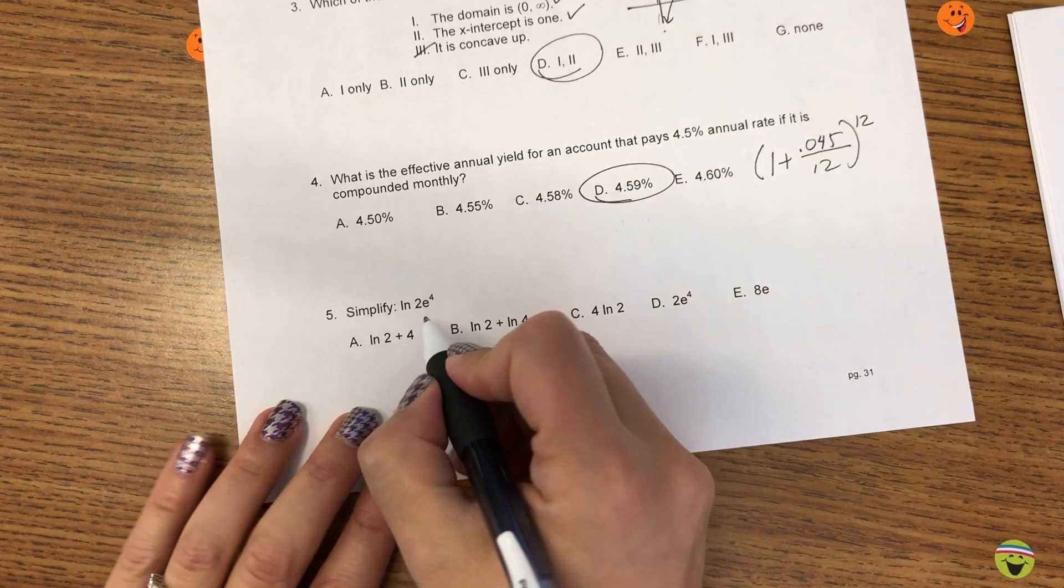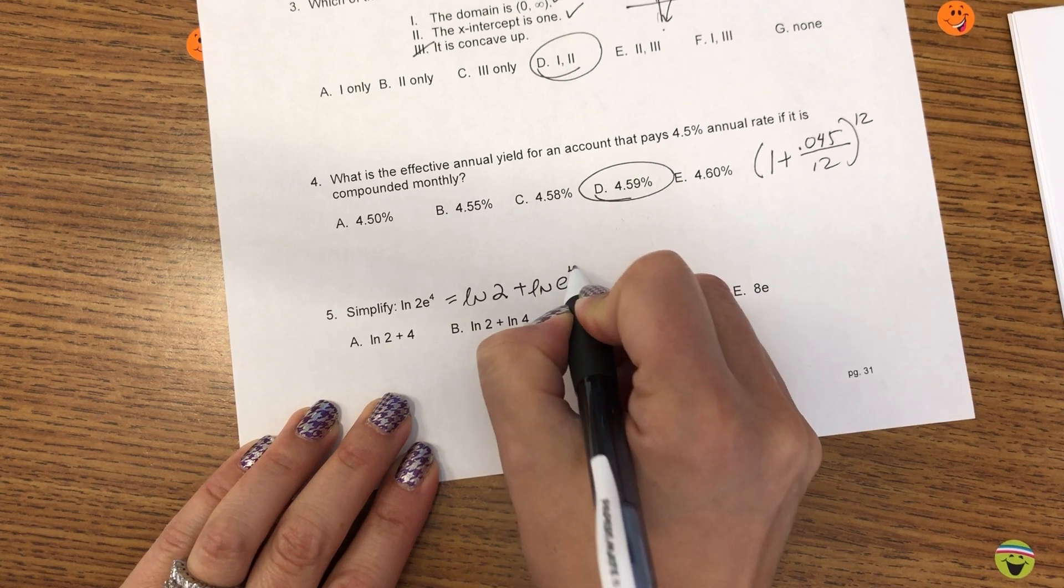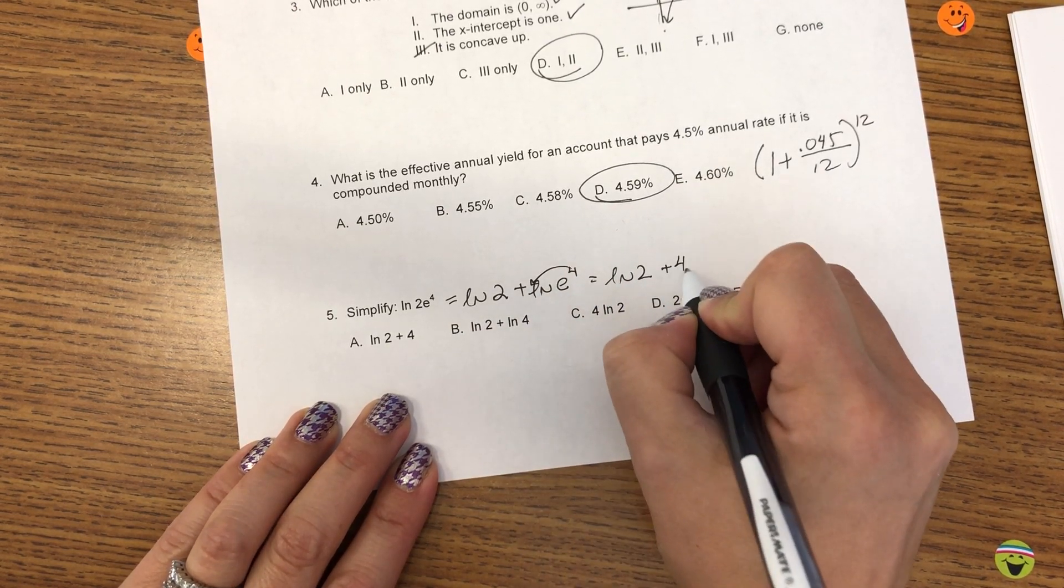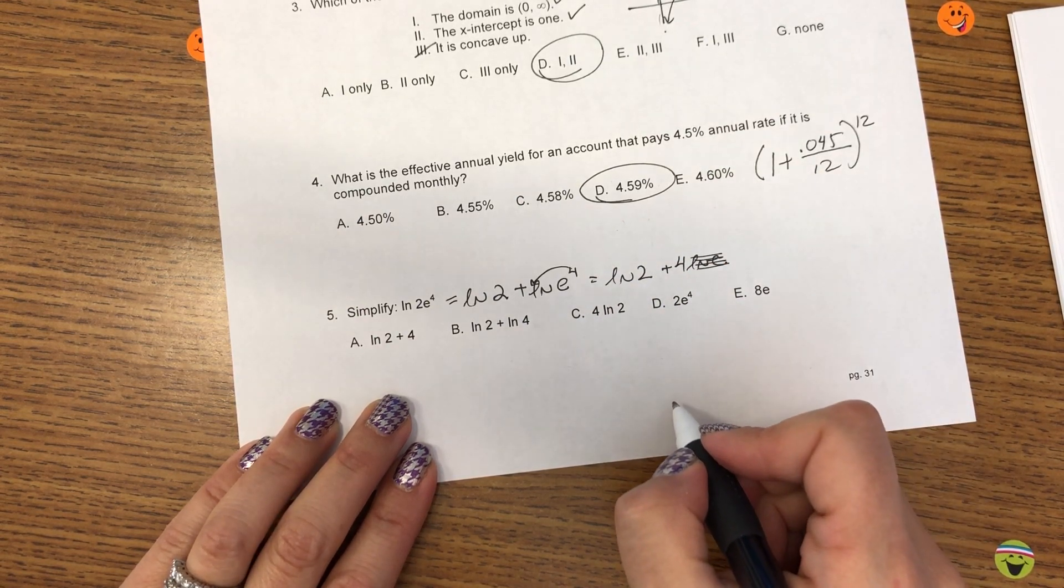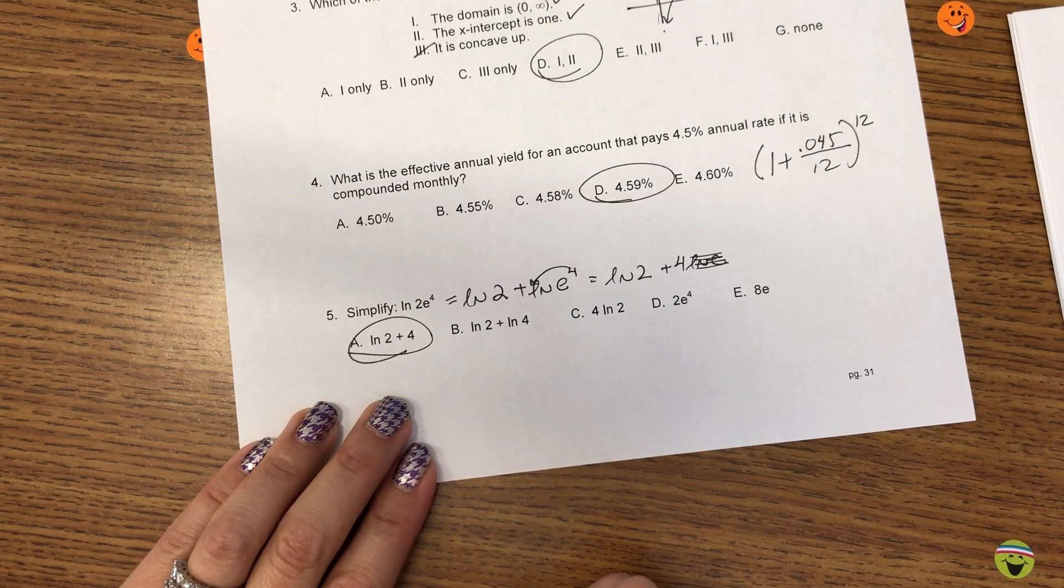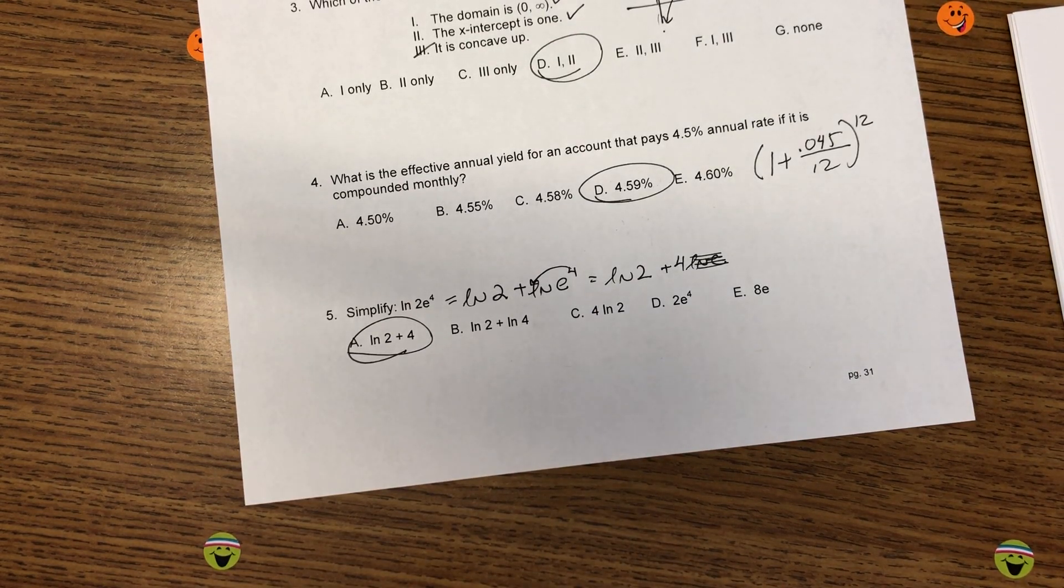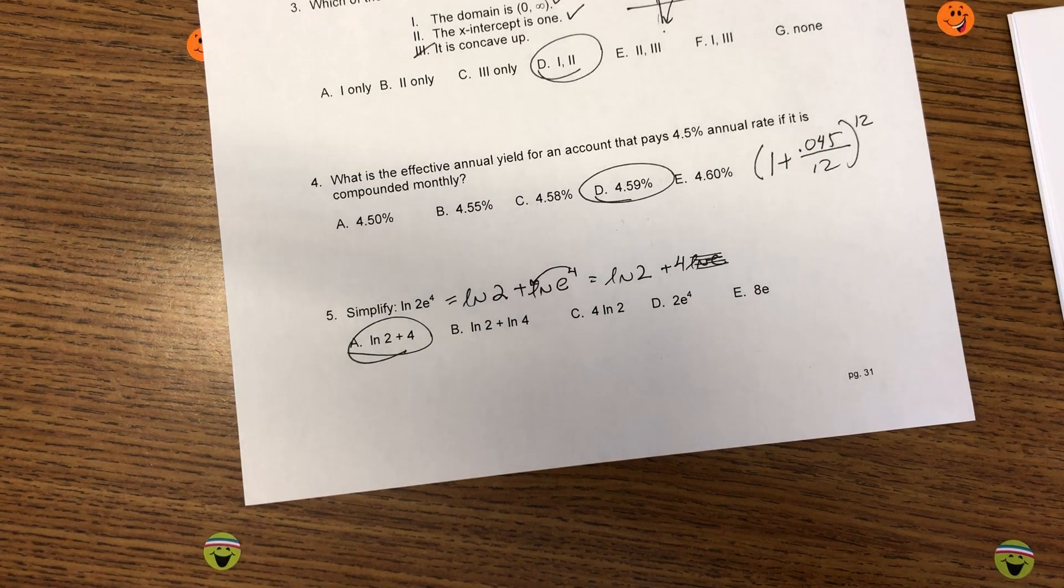And then, lastly, to simplify this, I first have to use my properties of logarithms to separate the argument. And then, LN of E is 1. So, LN of 2 plus 4. A. Make sure you can do the entire test review with no help, confidently, for your test. Thank you.